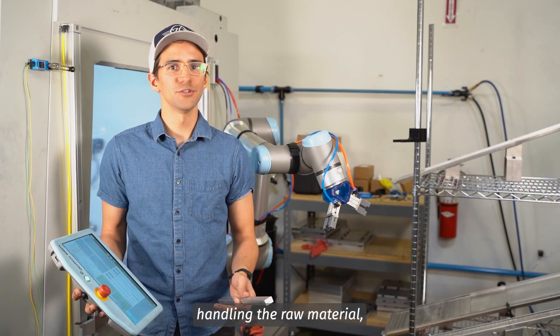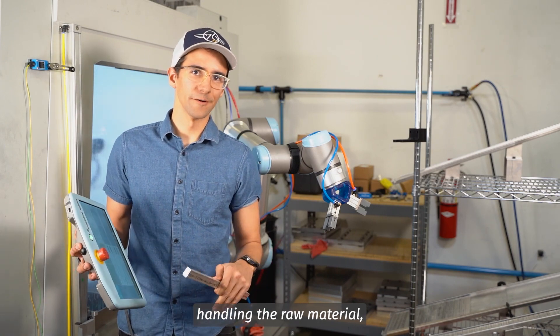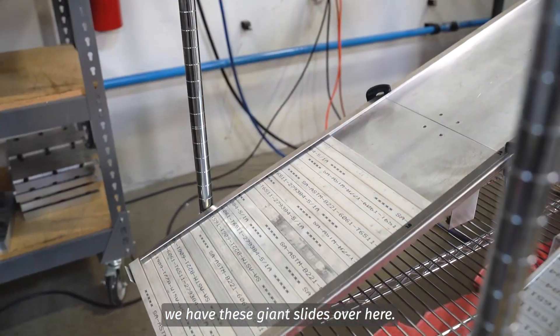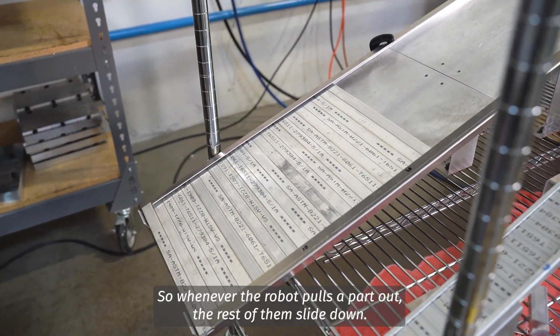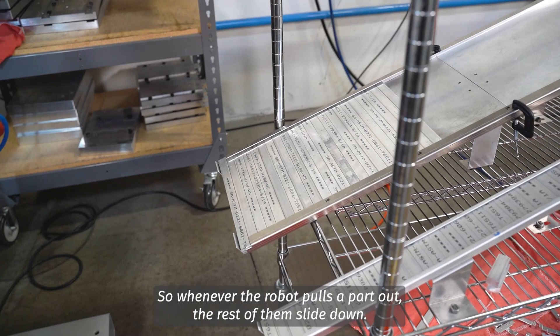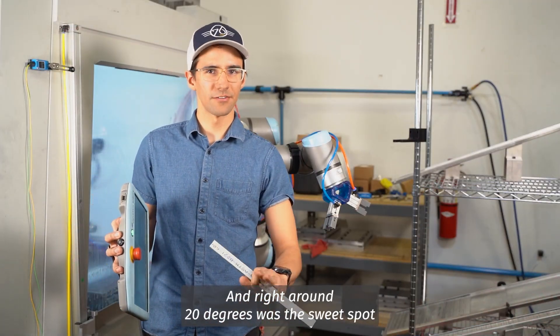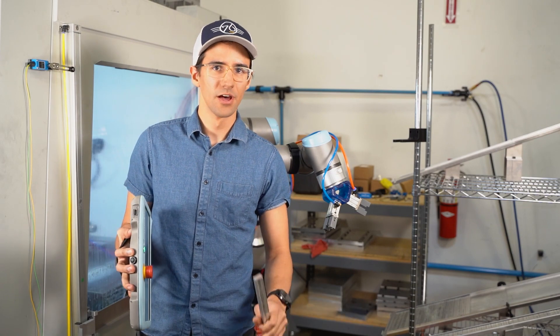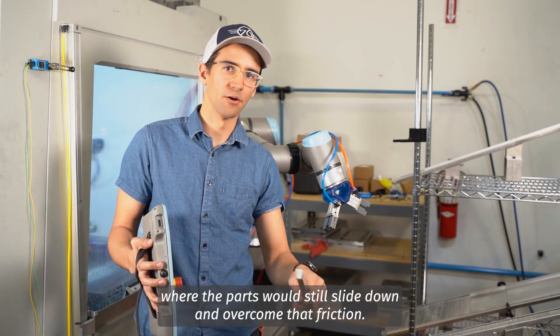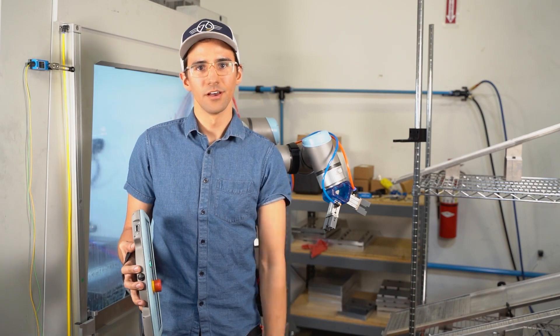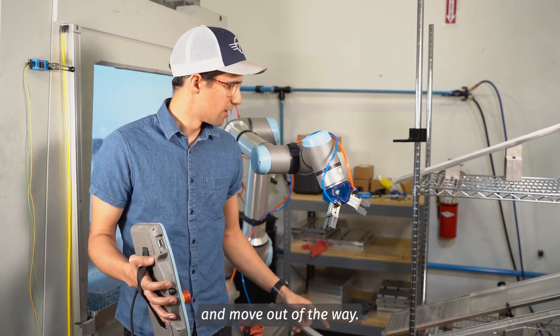When it comes to handling the raw material, we have these giant slides over here. So whenever the robot pulls a part out, the rest of them slide down. When it comes to that slide, we tested a few different angles, and right around 20 degrees was the sweet spot where the parts would still slide down and overcome that friction, and also is light enough for the robot to pick up and move out of the way.